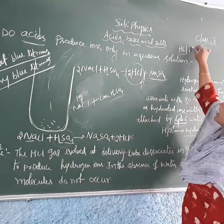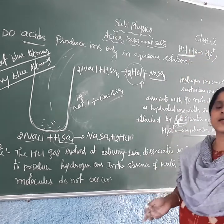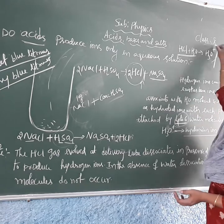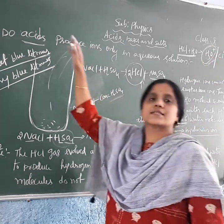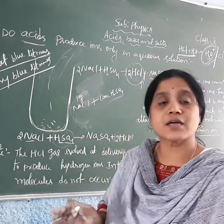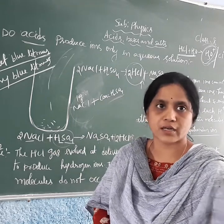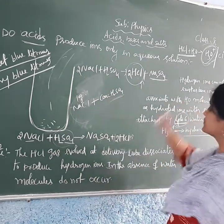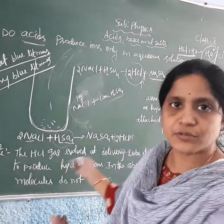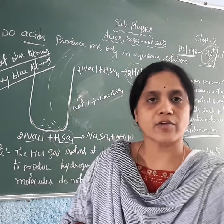When HCl reacts with water, it produces H₃O⁺ ions — that is, it dissociates into cations and anions: H₃O⁺ ions and Cl⁻ ions. Due to the presence of H₃O⁺ ions, the blue litmus paper turns red. H⁺ ions exist in aqueous solution only, and for their existence, 4 to 6 water molecules are required. We call this the hydronium ion. Through this activity, we conclude that acids contain H⁺ ions only in the presence of an aqueous solution.